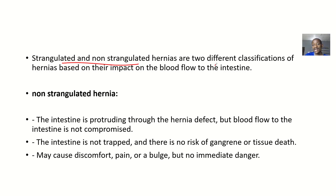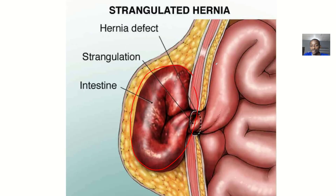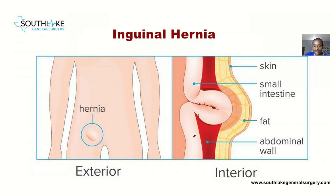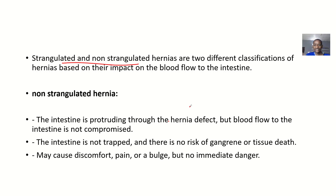So strangulated and non-strangulated hernias are two different classifications based on their impact on blood flow to the intestine — whether or not they are affecting blood flow. This twisting shown here would definitely affect the blood supply, making it a strangulated hernia. If the intestine is just going through mildly with no constriction, that's a non-strangulated hernia.